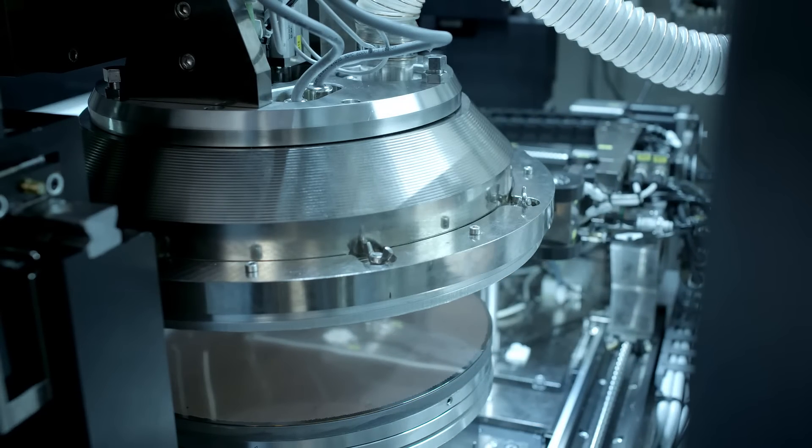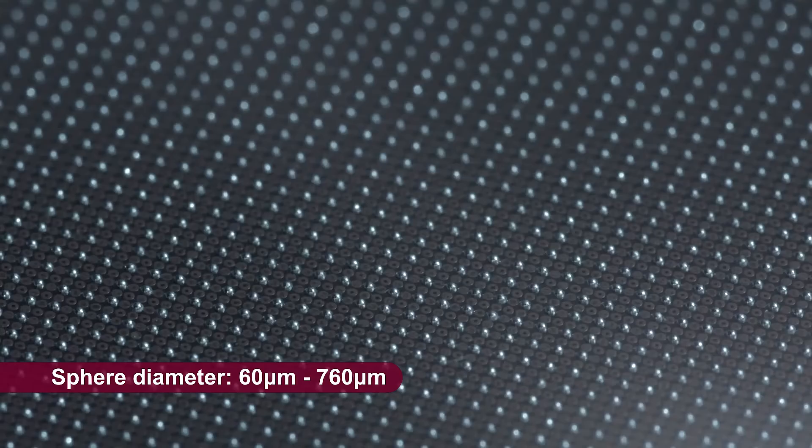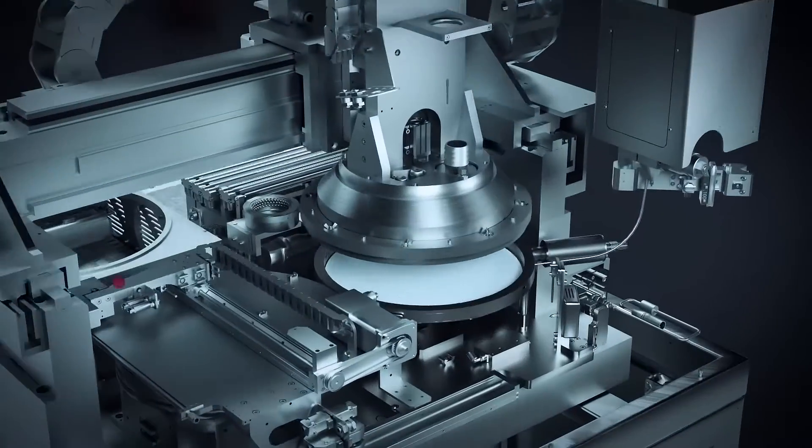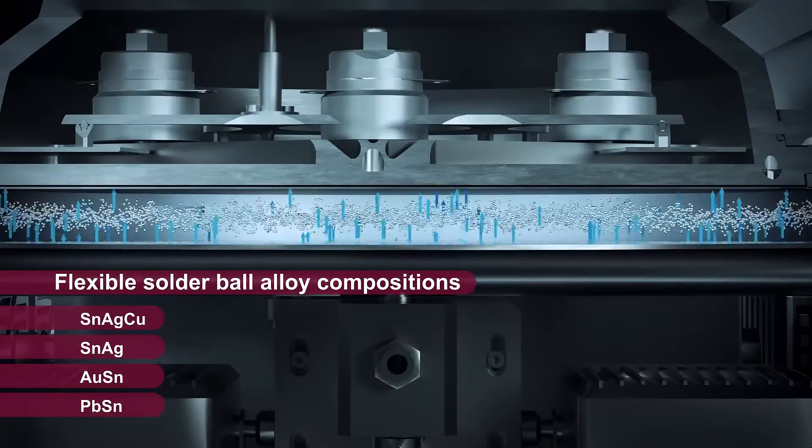Ultra SB Square offers unprecedented flexibility by allowing solder spheres from as small as 60 to up to 760 micrometers and a variety of solder ball alloys like tin silver copper, tin silver, gold tin, or lead tin.